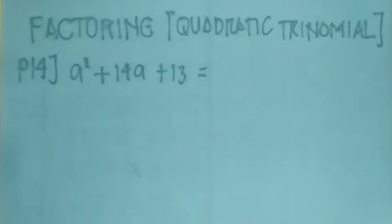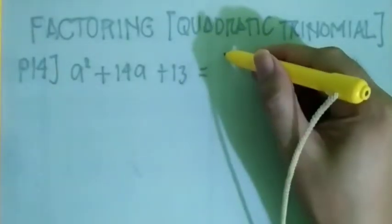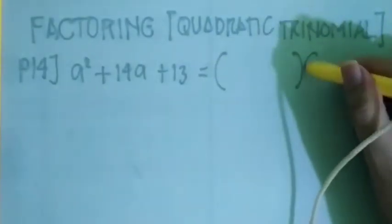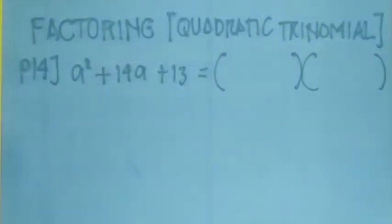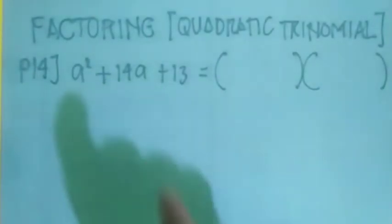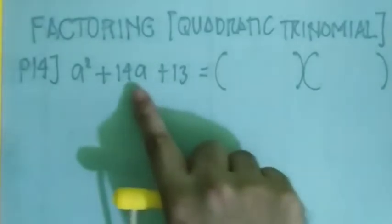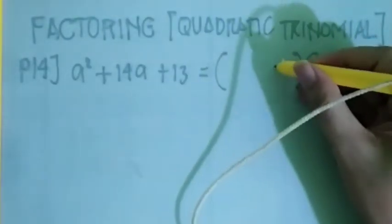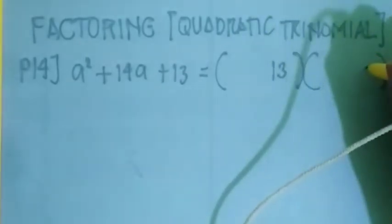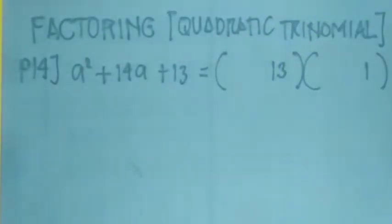So, a squared plus 14a plus 13. So pagka ganito ang papaktori natin, iba yung nasa gitna, ito yung iplaplast mo yung kanyang mga roots. So paano mawaplast ito? Ganito yung roots, ibig sabihin yan ay 13 and 1, because...